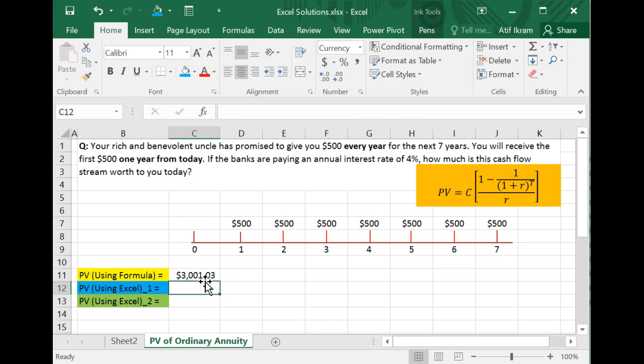And so when you do this, you find that the present value of this annuity is $3,001.03. As you can see, there's a lot of room for you to make a mistake over here. One bracket here, one bracket there and you could mess this whole thing up. Fortunately, there are better ways of going about it.